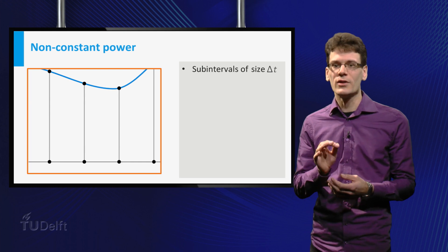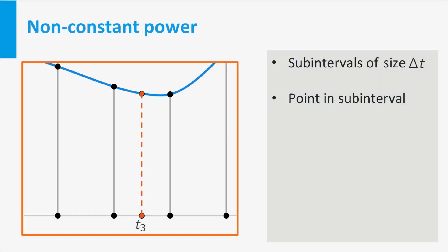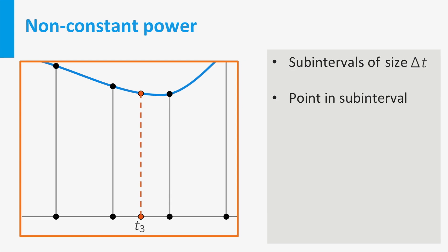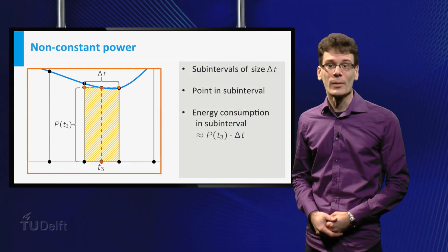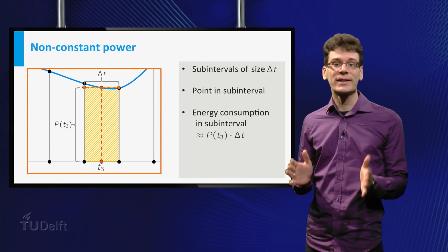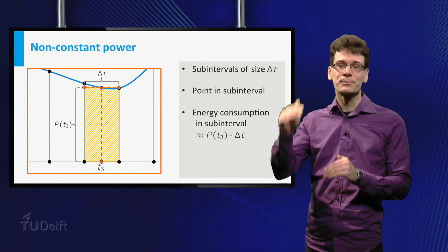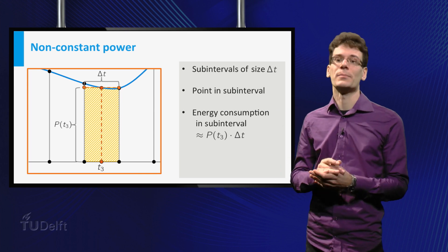Let's zoom in on one of the subintervals to make this more precise. First, we choose a time in the interval, let's call it T3 because we are in the third subinterval. Then we pretend that on this interval the power is constant and equal to the power at time T3. This is an approximation. The real energy consumption on this interval is then approximately equal to P times delta T. We can represent this product graphically by the area of a rectangle with base delta T and height P of T3, as shown in the picture.